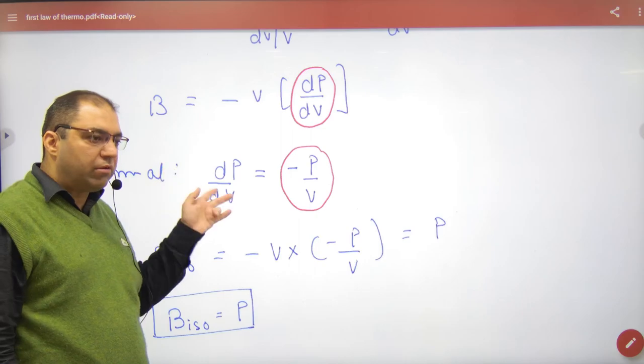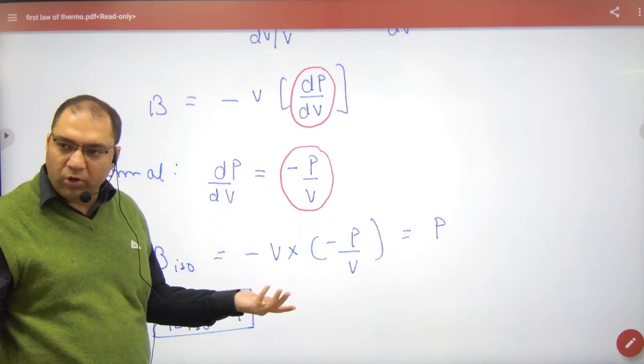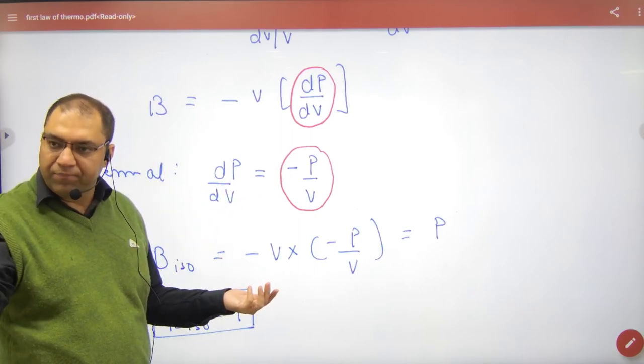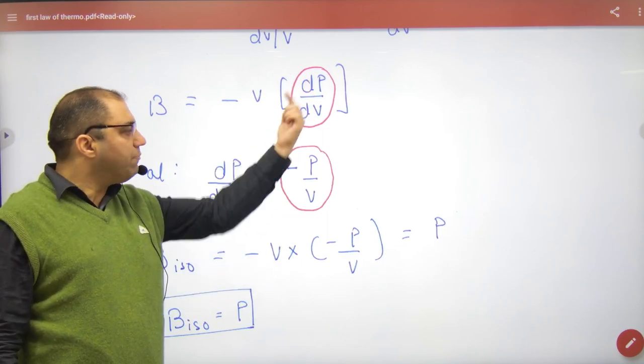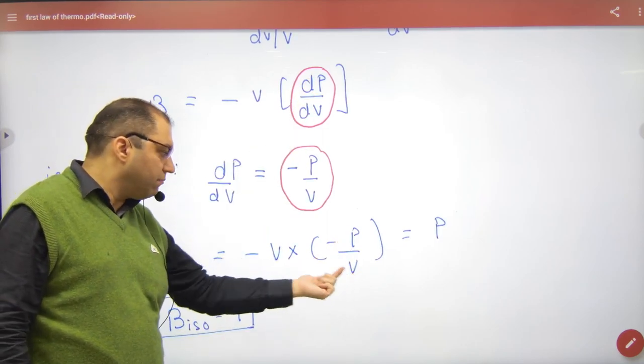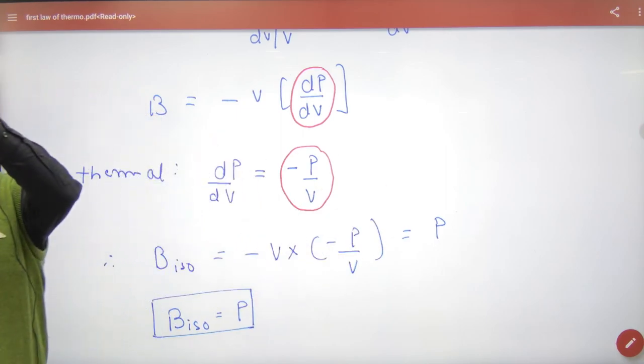Slope isothermal, what is it? Minus P upon V. Differentiate by V. Slope minus P by V. Minus P by V. Minus V cancels. So bulk modulus P equal, bulk modulus P equal, done.